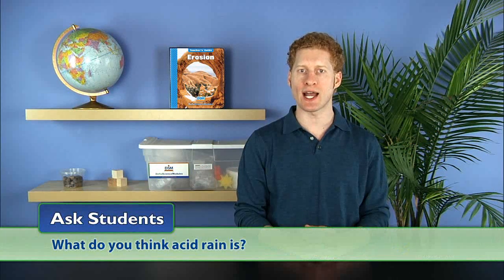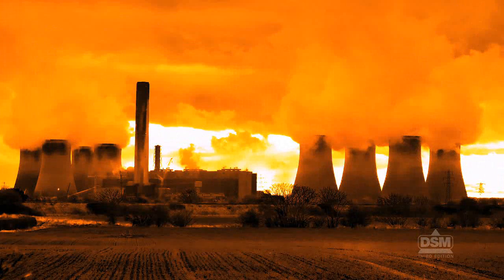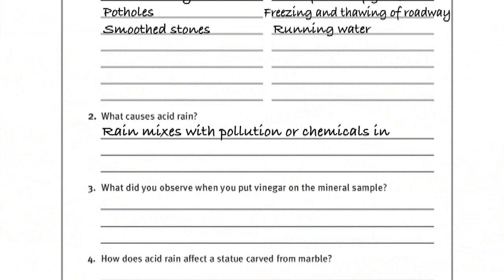Next, tell the students that they will experiment with another type of chemical weathering and ask, what do you think acid rain is? Explain that acid rain is rain that comes in contact with contaminants, such as industrial exhausts, and becomes acidic. Have students answer question two on their activity sheets.